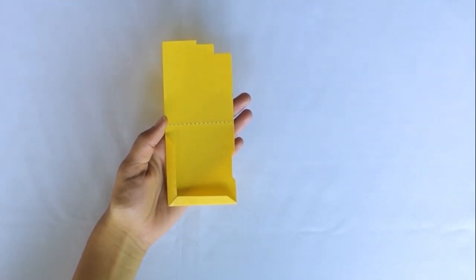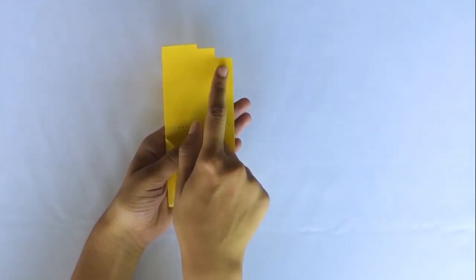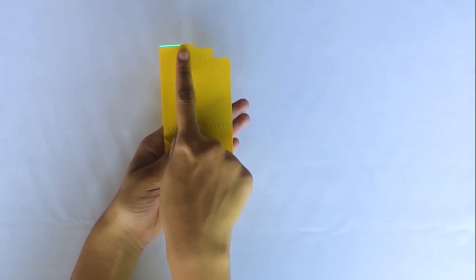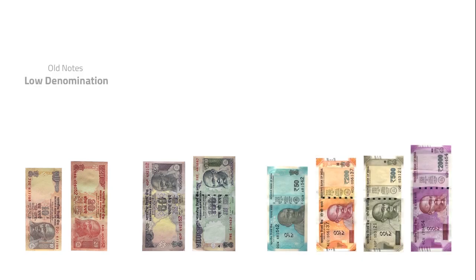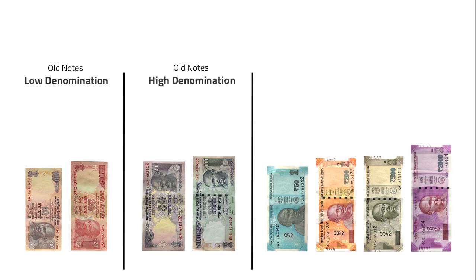You can find three steps at the top edge of the template. All the currency notes can be classified into three categories: old notes low denomination, old notes high denomination, and new notes.